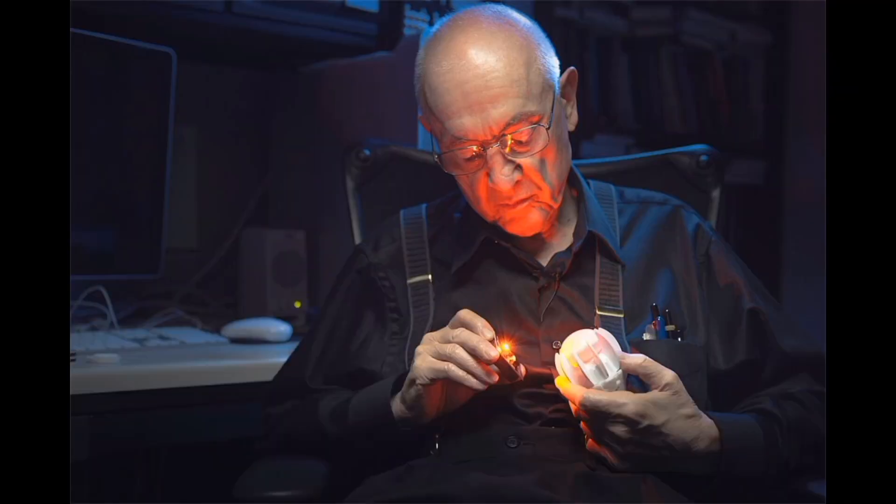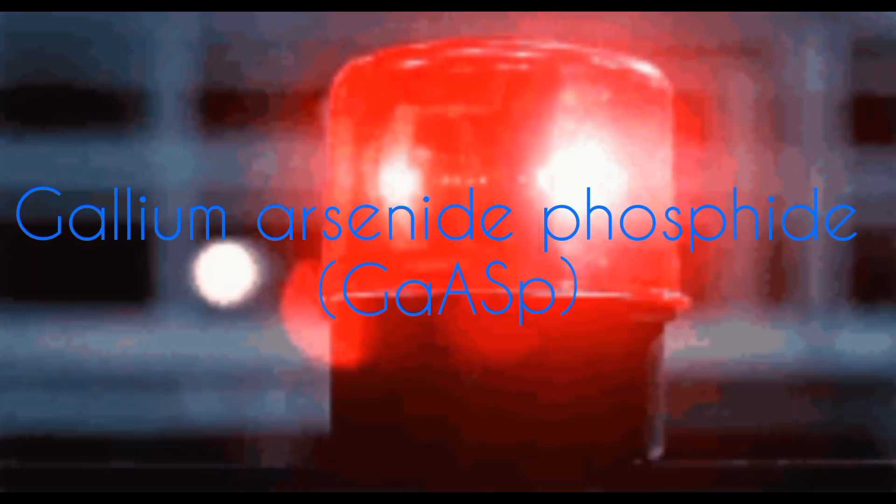Nick Holonyak Jr., an American engineer, in 1962 while working on his experiments, he developed the first practical visible spectrum LED by combining semiconductor alloy of gallium arsenide phosphide to create a red light.